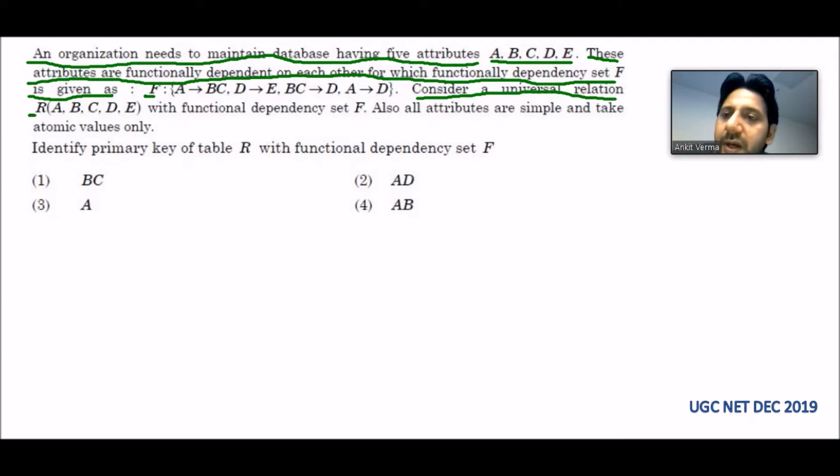Consider a universal relation R containing A, B, C, D, E with functional dependency set F. Also, all attributes are simple and take atomic values only. Now they are asking: identify the primary key of table R with functional dependency set F, and these are the options given.